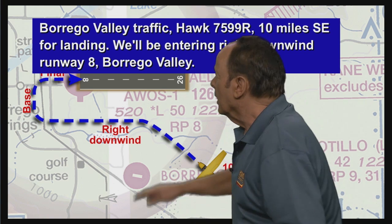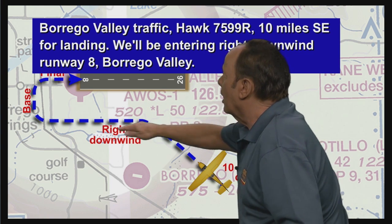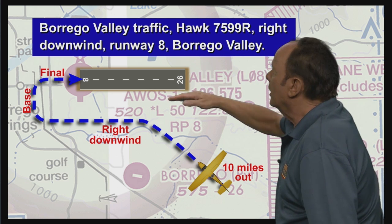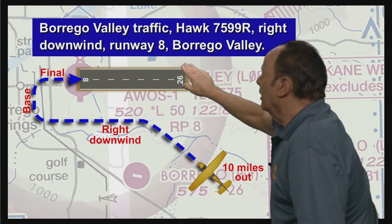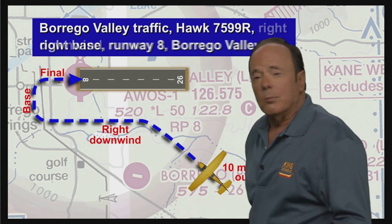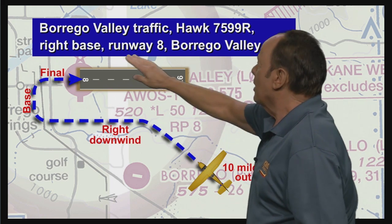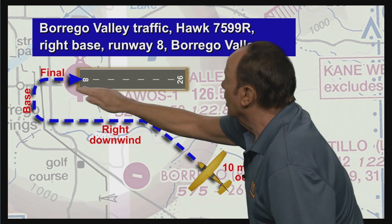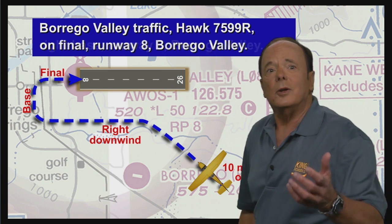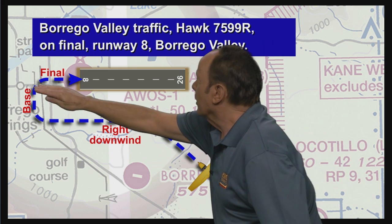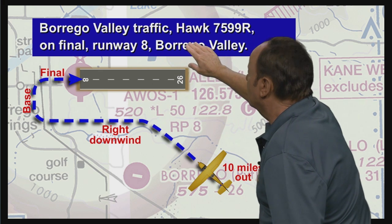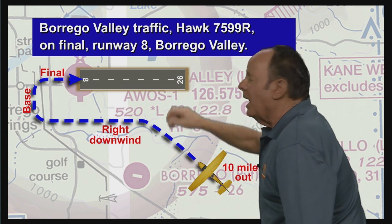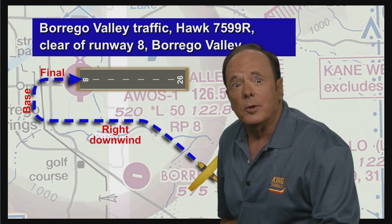When you get downwind, you'll want to announce your downwind: 'Brago Valley traffic, Cessna 7599 Romeo, right downwind, runway 8, Brago Valley.' When you get to base leg: 'Brago Valley traffic, Cessna 7599 Romeo, right base, runway 8, Brago Valley.' And finally, when you're on final: 'Brago Valley traffic, Cessna 7599 Romeo, on final, runway 8, Brago Valley.' Then you'd call again when you're clear of the runway: 'Brago Valley traffic, Cessna 7599 Romeo, clear of runway 8, Brago Valley.'